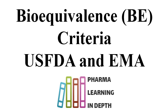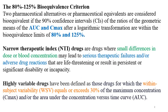Let's start with some basics. As we know, the Bioequivalence Criteria is 80 to 125%. Bioequivalence is said to be demonstrated when two pharmaceutical formulations — pharmaceutical alternatives or pharmaceutical equivalents, i.e., the reference formulation and the generic or test formulation — are equivalent when the 90% confidence interval (CI) of the ratios of the geometric means of AUC and Cmax after logarithmic transformation falls within the Bioequivalence limits of 80 to 125%.